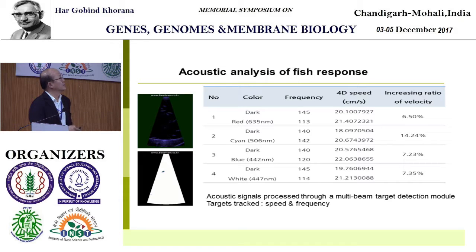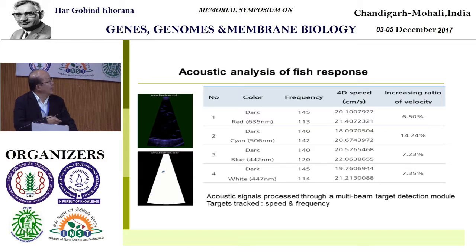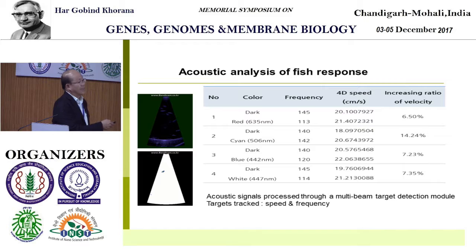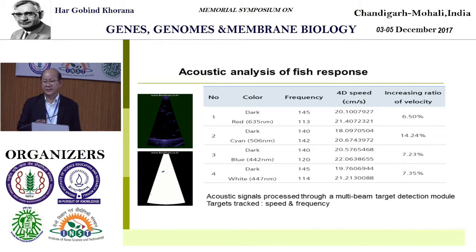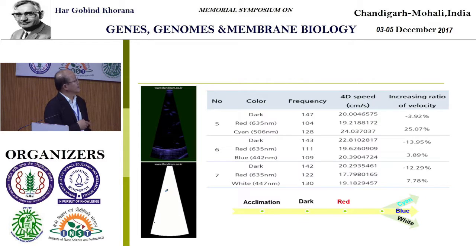These are the different experiment conditions — for example, dark to red, dark to cyan, dark to blue, and a control with white LED at the same photon amount. What you can see is the rate of movement increased by LED illumination. Upon illumination with cyan LED, it shows the most drastic change compared to the others, meaning cyan is more effective at inducing photoresponse in fish.